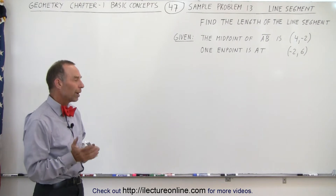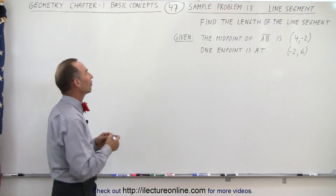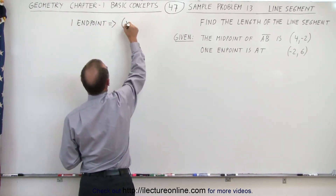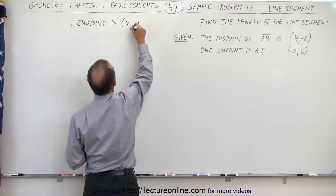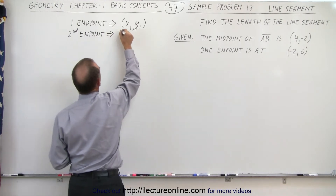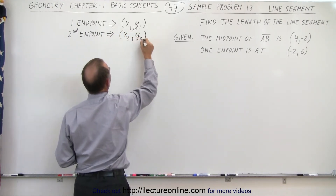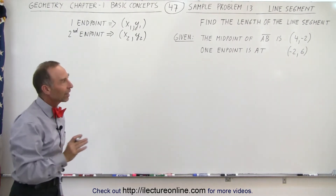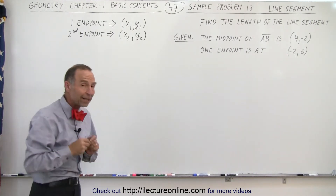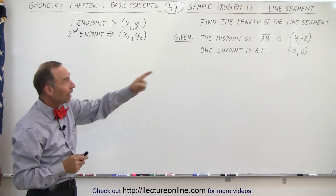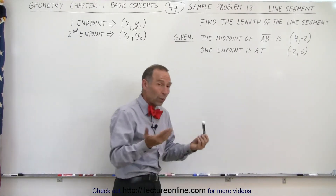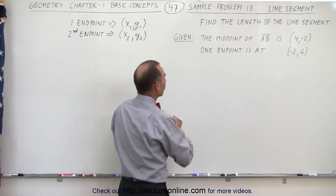What we should do is name the two endpoints of the line segment. One endpoint can be named as x1, y1, and the second endpoint can be named x2 and y2. Based upon that, let's calculate the midpoint using those two notations for the endpoints, realizing that one endpoint is at (-2, 6). The methodology for finding the midpoint is as follows.